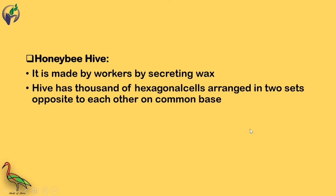The honey bee hive is made by workers by secreting wax. The hive has thousands of hexagonal cells arranged in sets, with two sets opposite to each other on a common base.